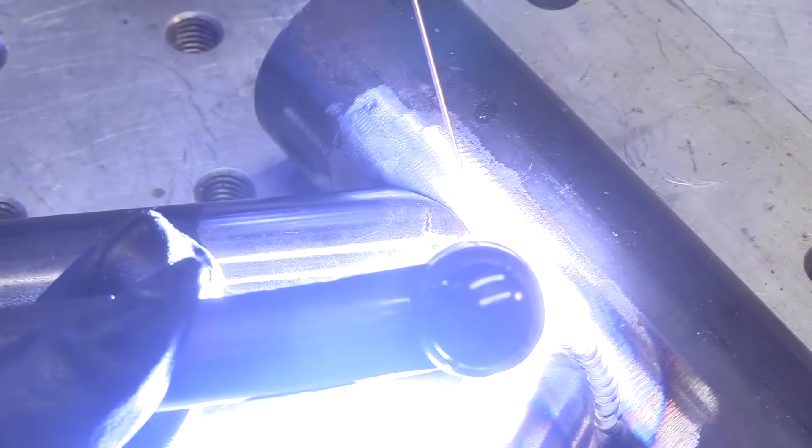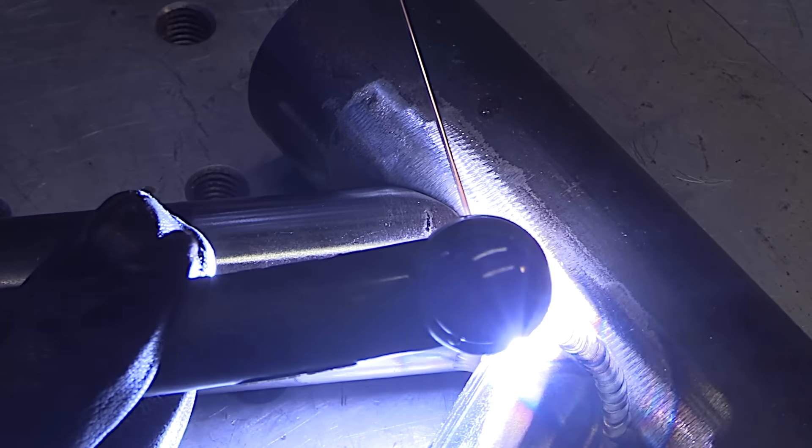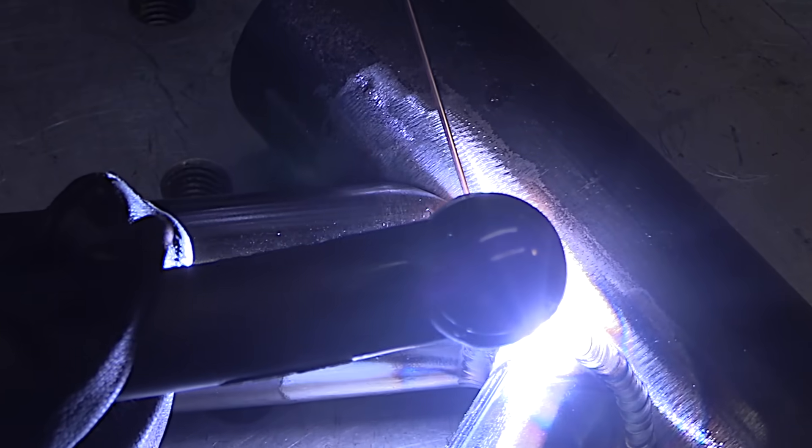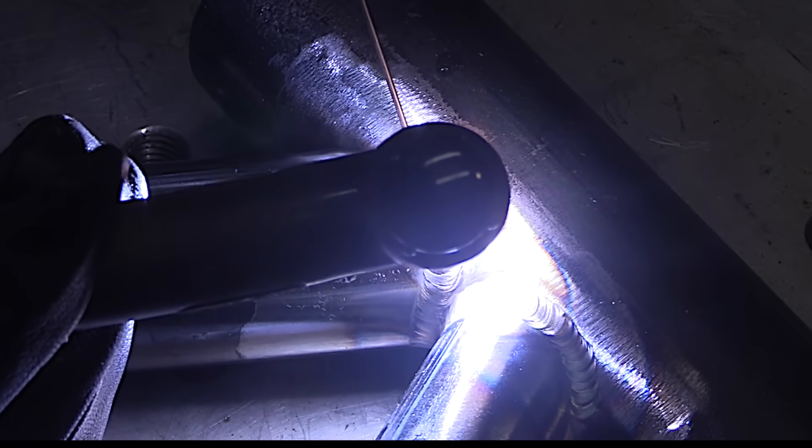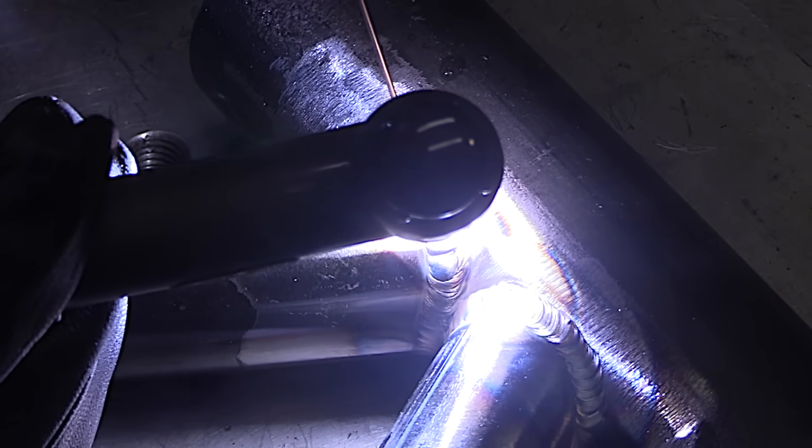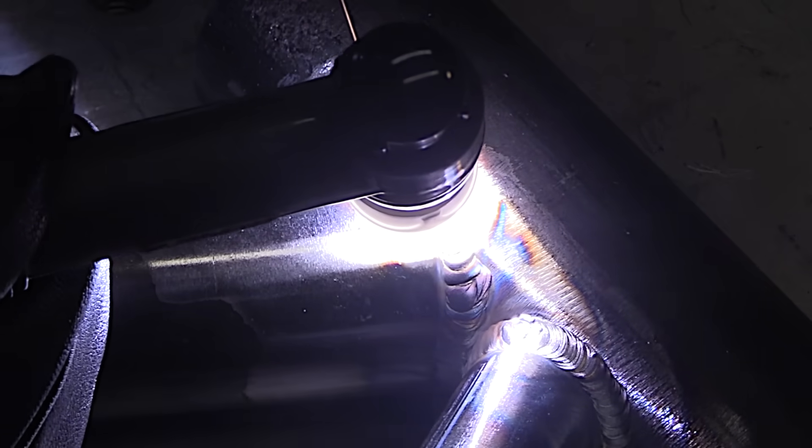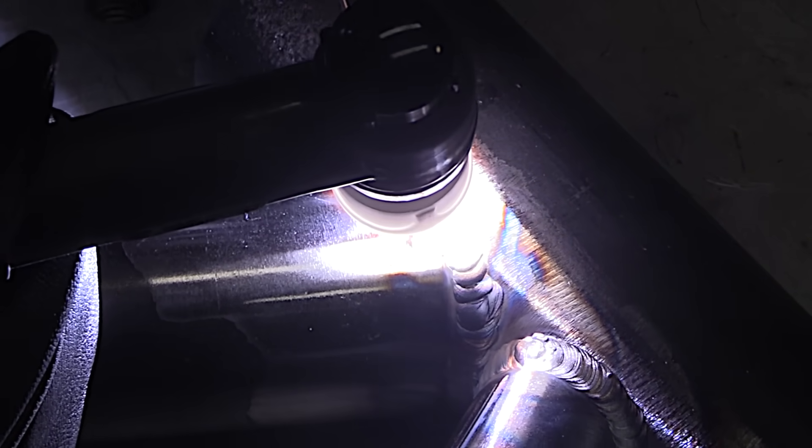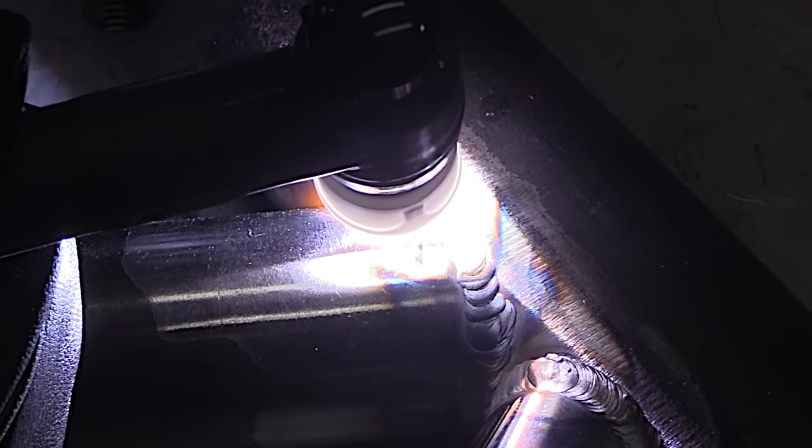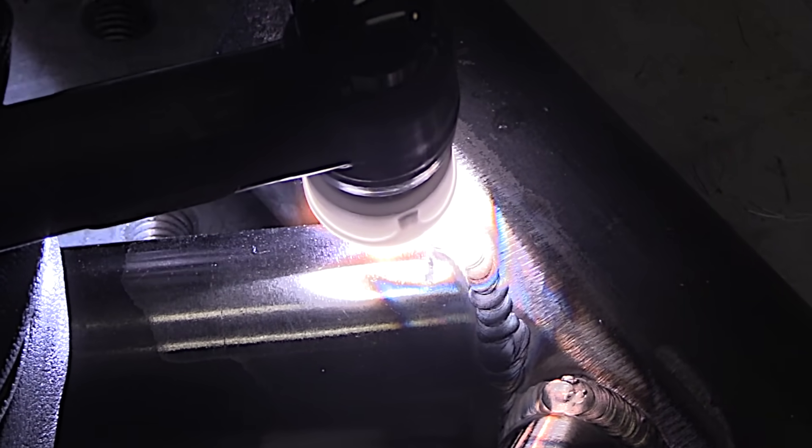Now this shot really shows what a large argon envelope this 10 cup puts out. Right about along here you can start seeing where the heat tint stops and starts, and it's just got a really big shielded area following along there.